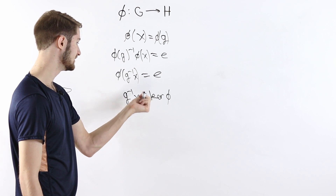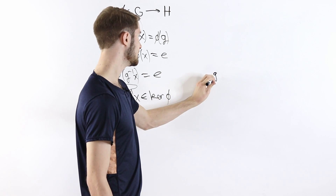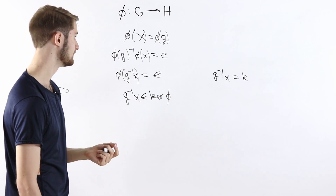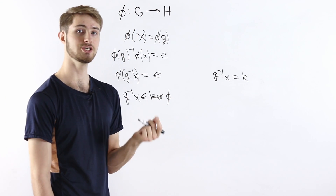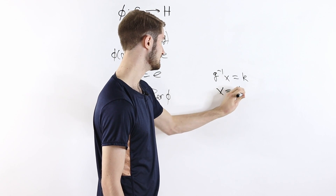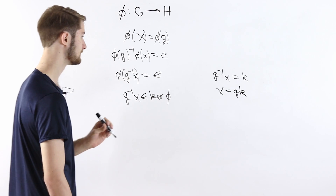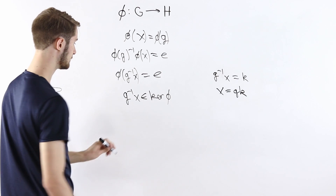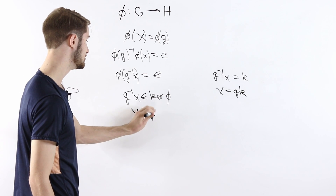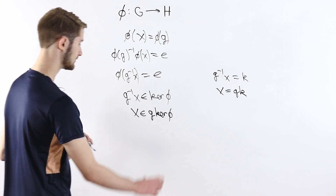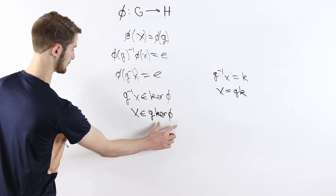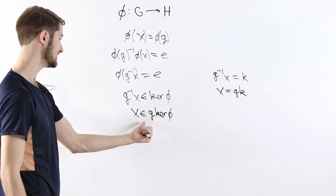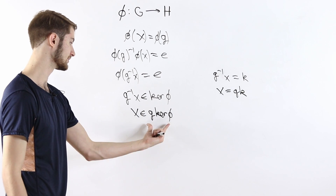If g inverse x is in the kernel of phi, then we can write g inverse x equals k for some element k in the kernel of phi. Multiplying on the left by g gives x equals g times k. So x is equal to g times k, where k is in the kernel of phi, which means x is an element of the coset g times the kernel of phi. So we've just shown that phi of x equals phi of g implies x is an element of g times the kernel of phi.